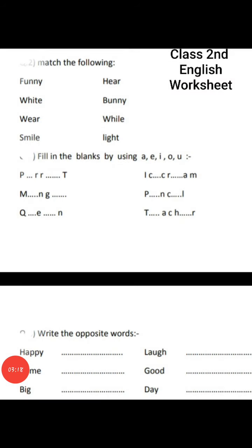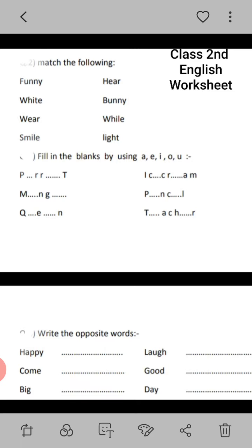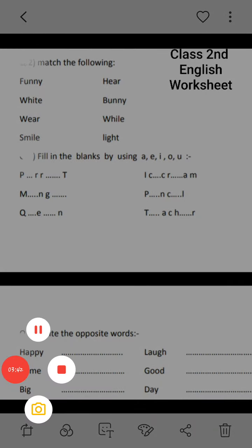Now after the question and answer, look here — the worksheet of this week. Question number one: Match the following. Match here with rhyming words. Yahan pe rhyming words diye gaye hain, unse aapko match karna hai. Just look here: funny-bunny, white-light, wear-hair, smile-while.